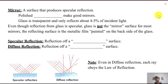That was very applicable to lenses. But now we're talking about mirrors, which work on the principle of reflection. So let's define a mirror. We look in a mirror every day. A mirror is a surface that produces specular reflection, which I will define here in a couple minutes.